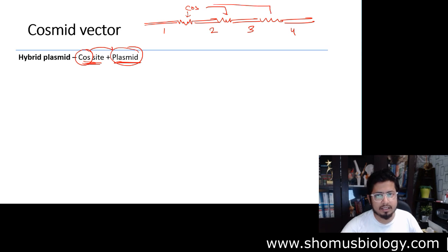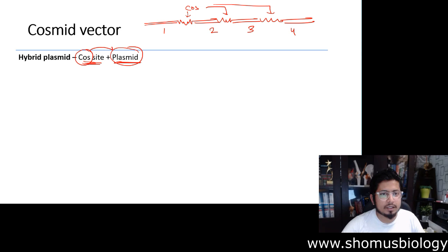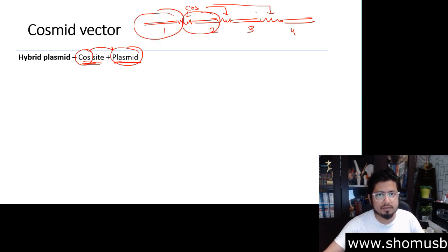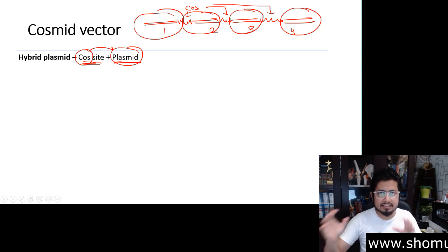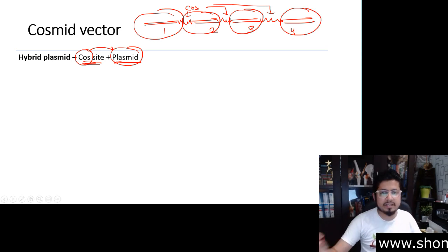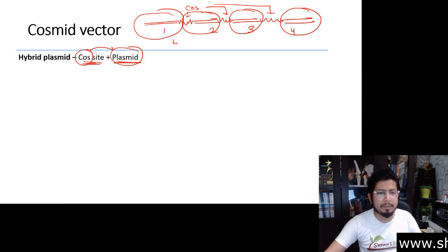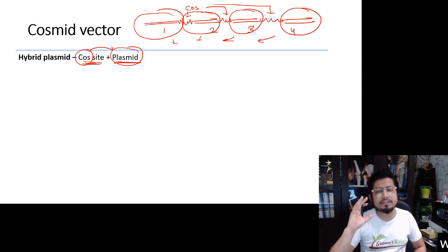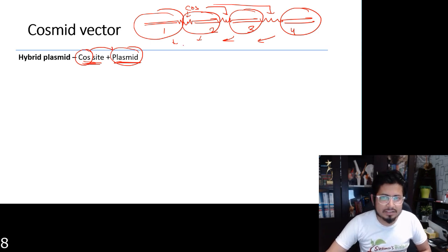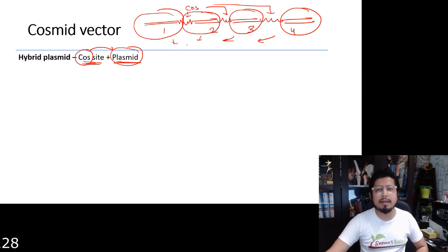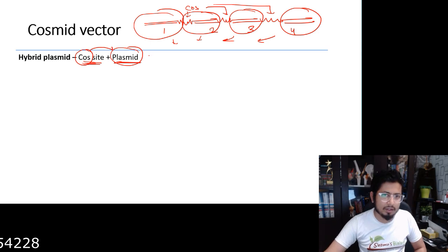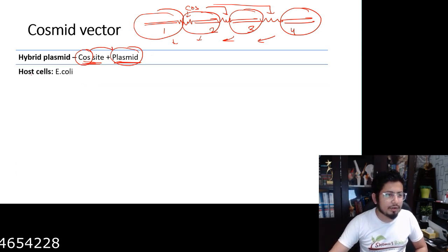Utilizing the cos sites, we can package individual fragments of the DNA. Once we can package these individual fragments, they can be released for the process of amplification — what we call molecular cloning.